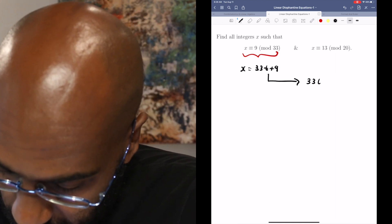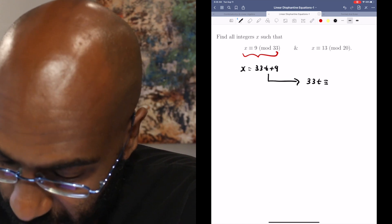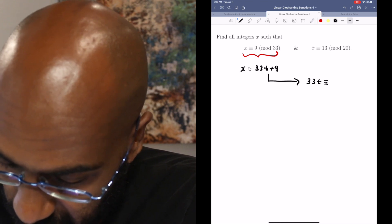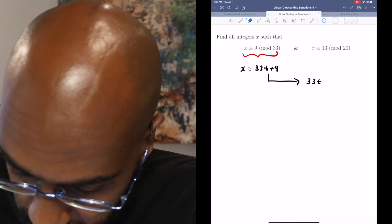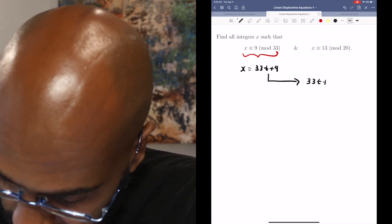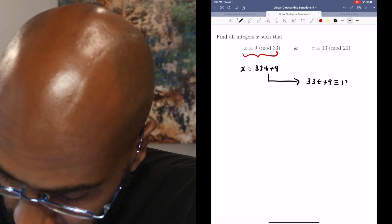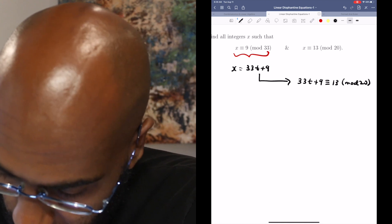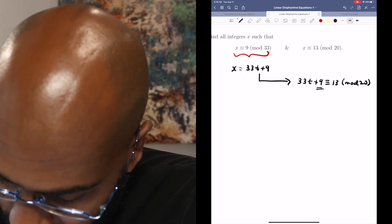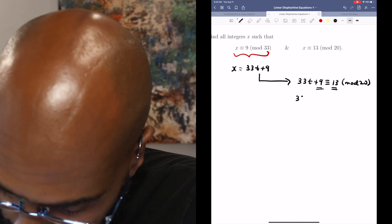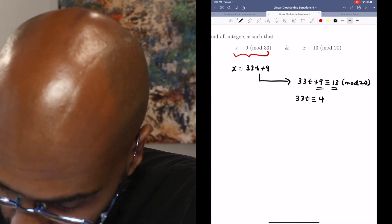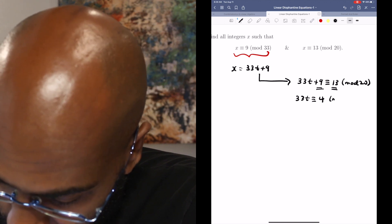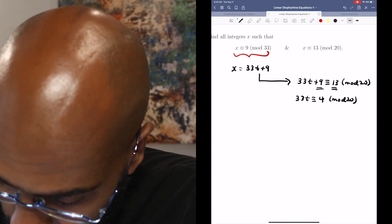So we can substitute that in for this congruence equation on the right, and say that we're trying to figure out values of t and then subsequently what values of x are that satisfy 33t plus 9 is congruent to 13 modulo 20. Subtracting from both sides, this is equivalent to finding values of t for which 33t is congruent to 4 mod 20. And hey,